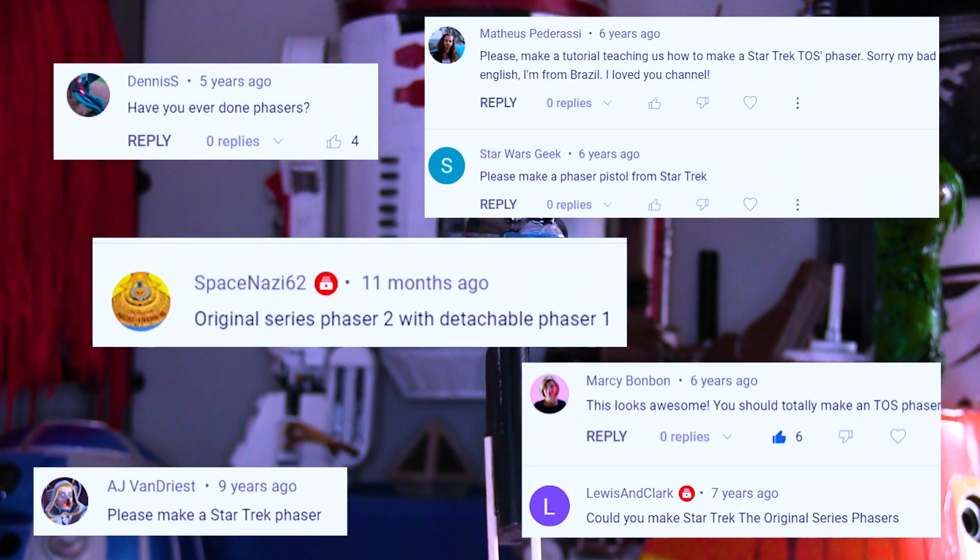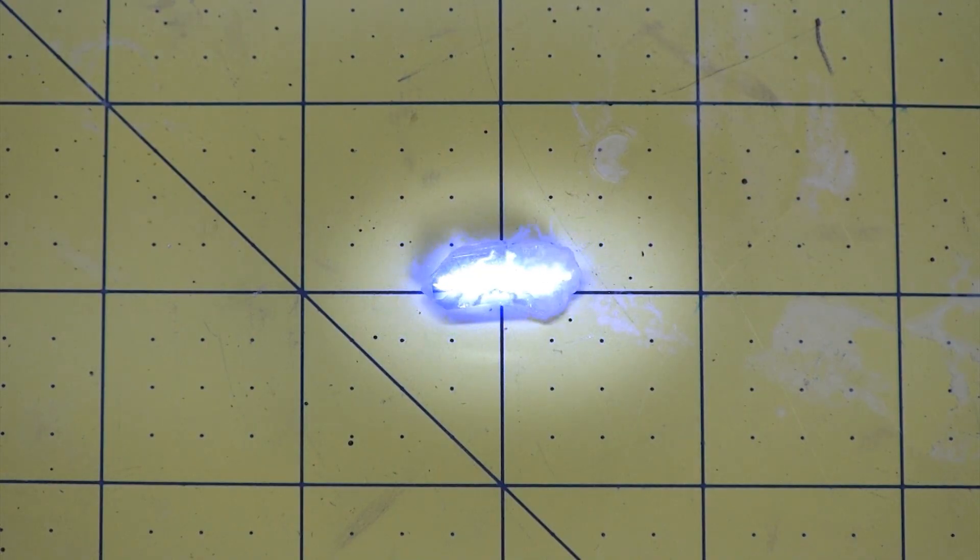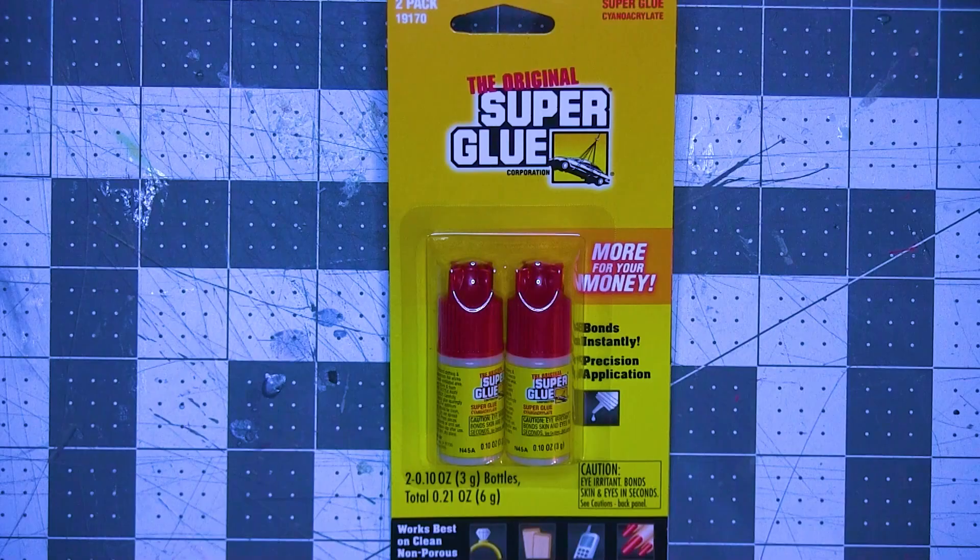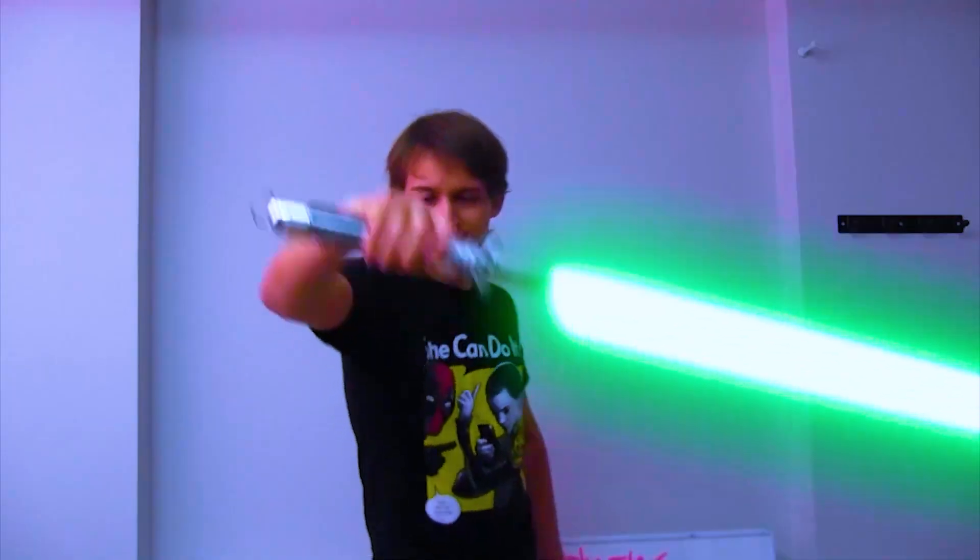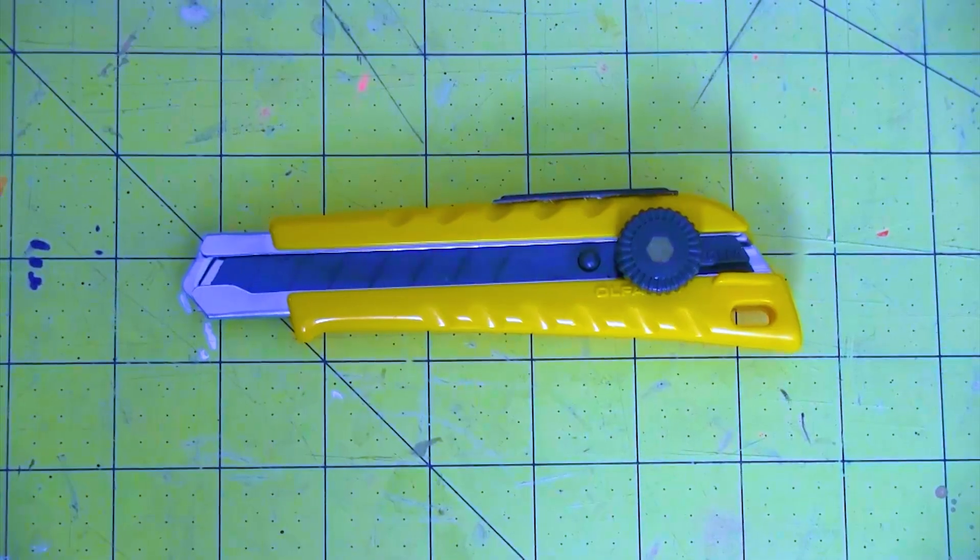Today I'm making a phaser! For this build I used EVA foam, craft foam, coffee foam, dilithium crystals, putty, paint, super glue, hot glue, cutting tools, sanding tools, safety gear, scissors, razor pens, and a box cutter.